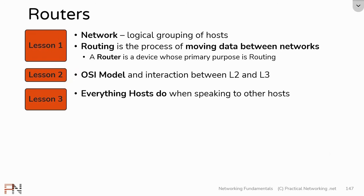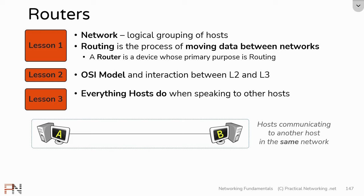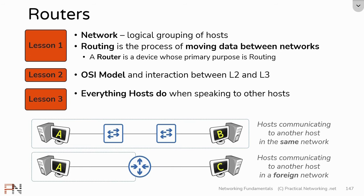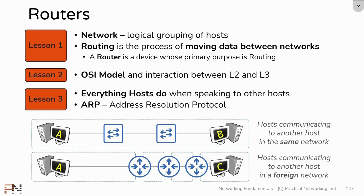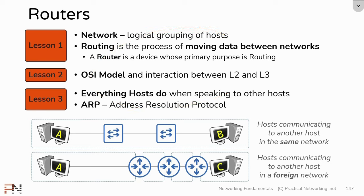Then in Lesson 3, we focused on hosts, and we showed you everything hosts do when speaking to other hosts. We first showed you everything hosts do to speak to other hosts in the same network, regardless of how they are connected. Both of these illustrations allowed us to discuss ARP, or the Address Resolution Protocol, and show you ARP's role in Internet communication. All of this is the prerequisite knowledge you'll need to fully understand this lesson. If any of these concepts are unfamiliar to you, please check out the first three lessons of this course — there are links in the description.